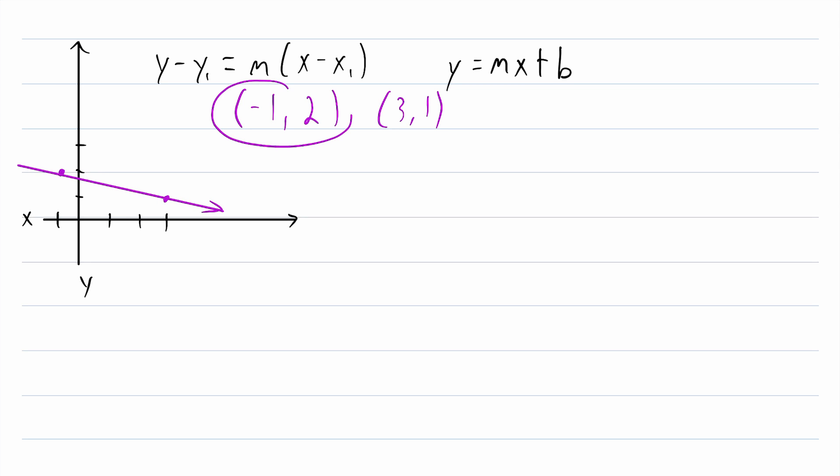We can already use either of these two points in our point-slope form equation. Let's say we pick this point here. Then we can write that y minus the y-coordinate of this point, which is 1, is equal to m multiplied by x minus the x-coordinate of this point, which is 3.